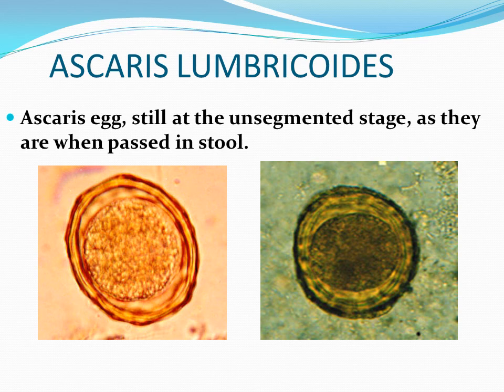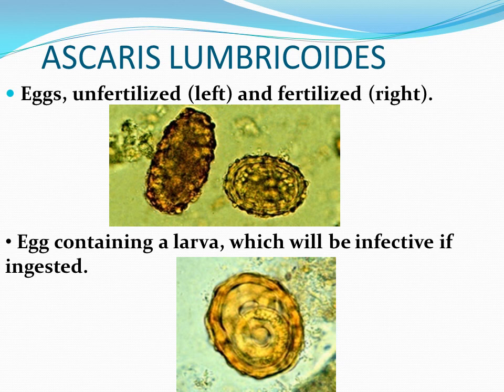This is the characteristic diagnostic stage of Ascaris lumbricoides within the stool. You can appreciate the unsegmented ovum in the middle, the clear concentric zone between the translucent shell and the unsegmented ovum, and the outer albuminous coat thrown into rugosities. The unfertilized egg is shown on the left and the fertilized egg on the right. In the lower figure, the egg contains a larva, which will be infective if ingested. Ascaris lumbricoides is infective when ingested in the form of an egg.